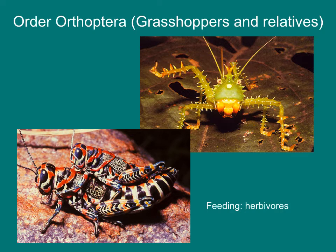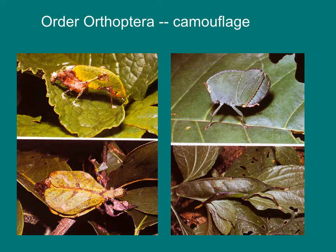Grasshoppers and relatives, the order Orthoptera, includes grasshoppers, crickets, katydids, and many other groups. These are all herbivorous insects. They are often brightly colored and, in many cases, are likely chemically protected. Many Orthoptera are also cryptically colored — some resemble leaves with remarkable accuracy.